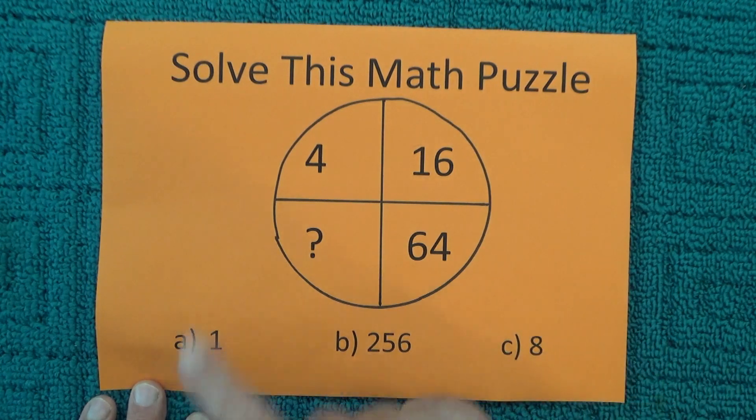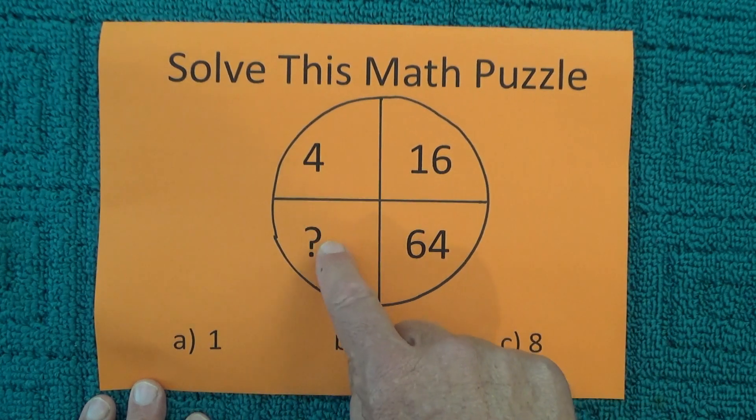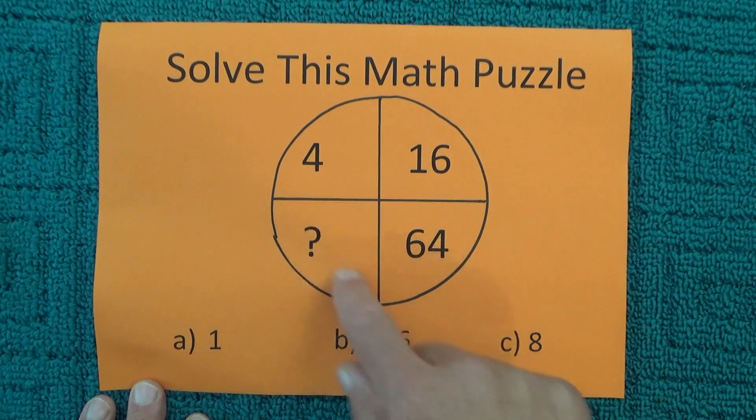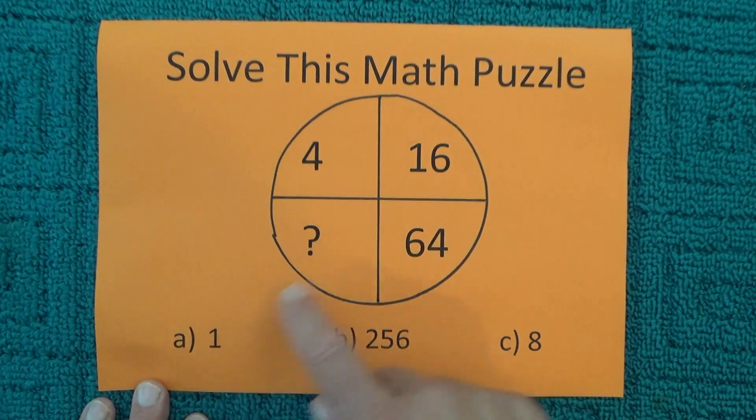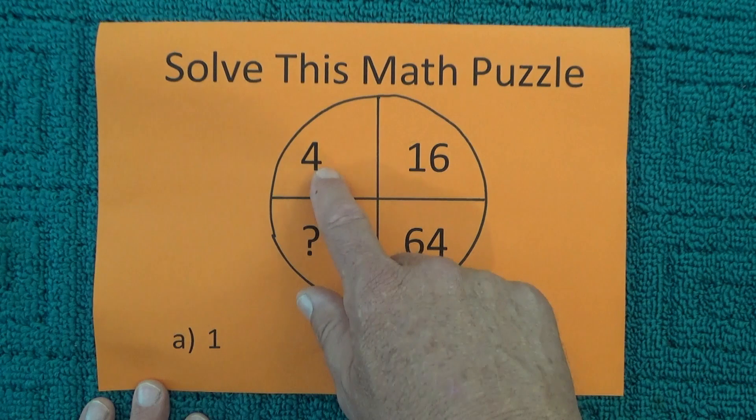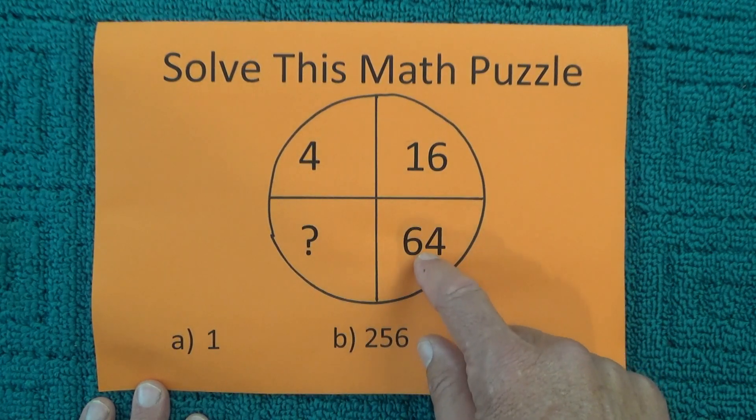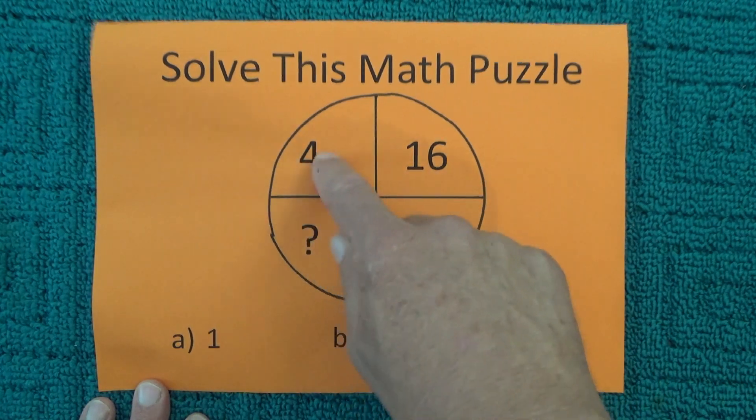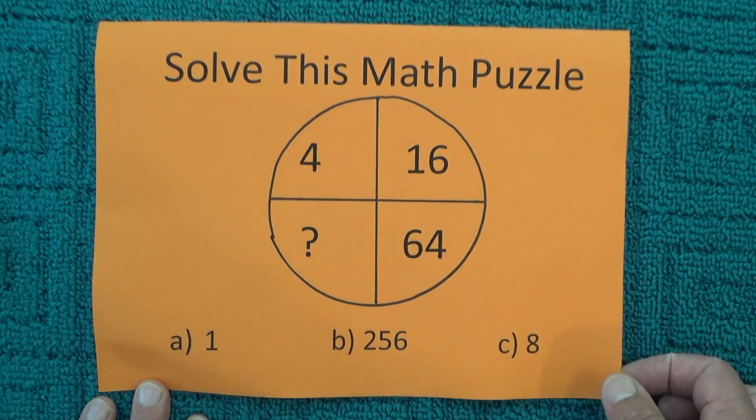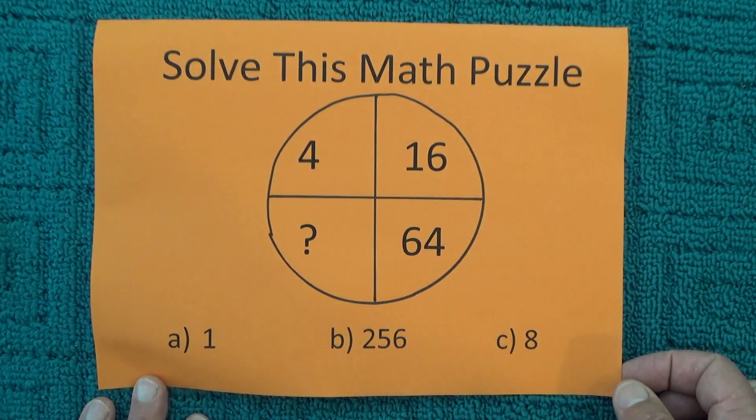However, if you were to say that the question mark is where you start from, then the answer could be one, because it would be one times four is four, four times four is 16, and 16 times four is 64. So one, four, 16, and 64 is another possibility as well.